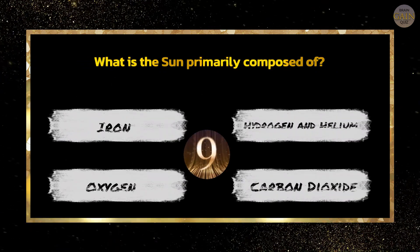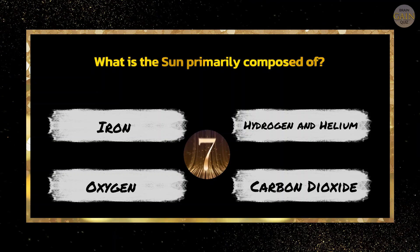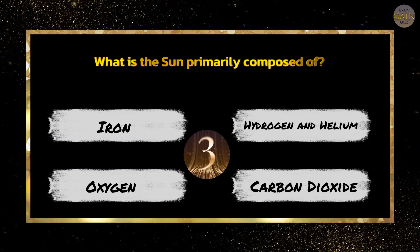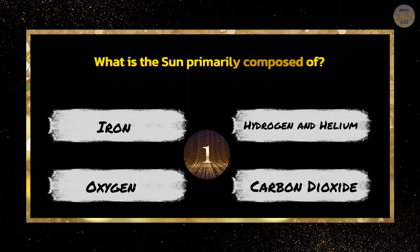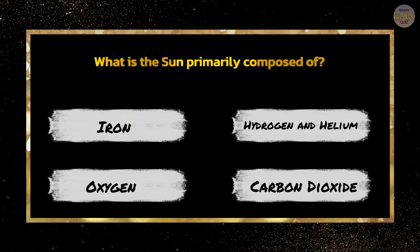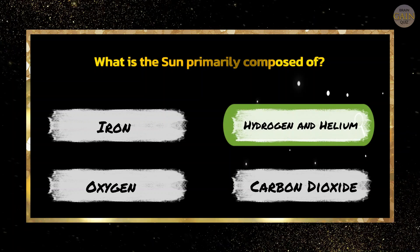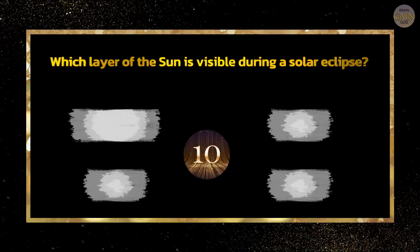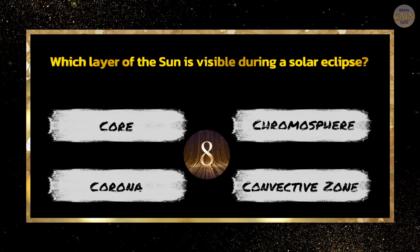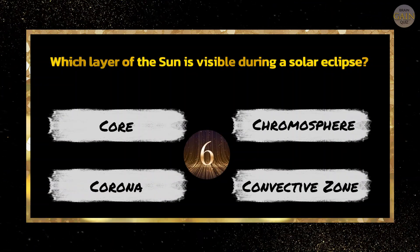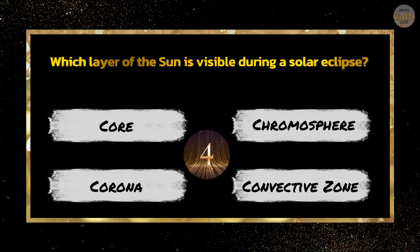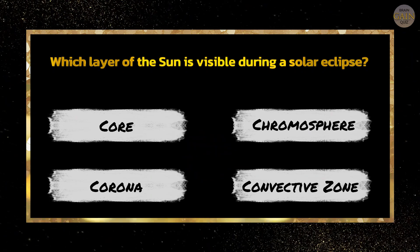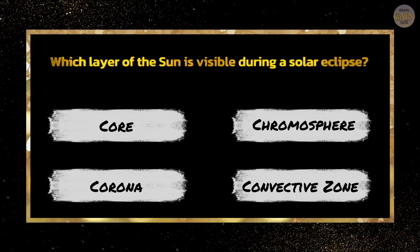What is the Sun primarily composed of? Hydrogen and helium. Which layer of the Sun is visible during a solar eclipse? Corona.